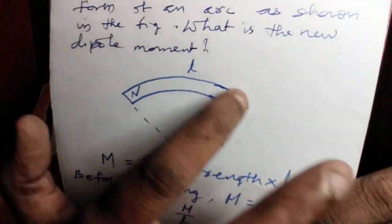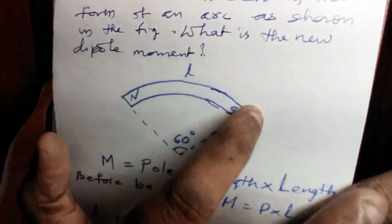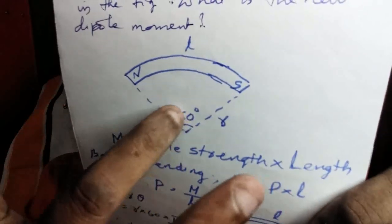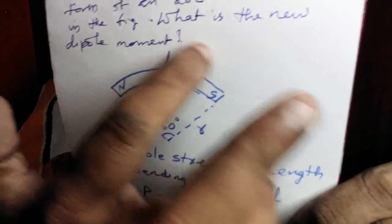This is the bar magnet bent to form an arc of radius R. This angle is 60 degrees. This figure is given.